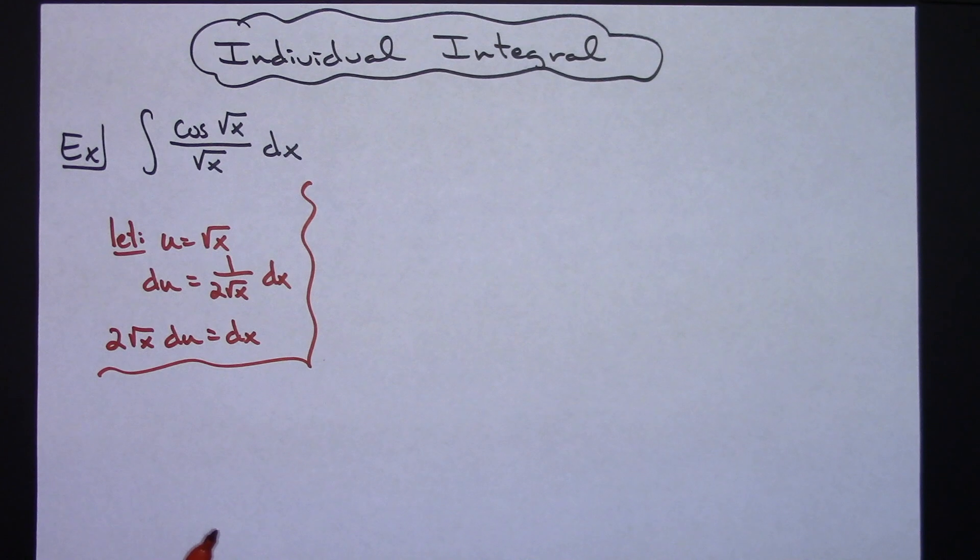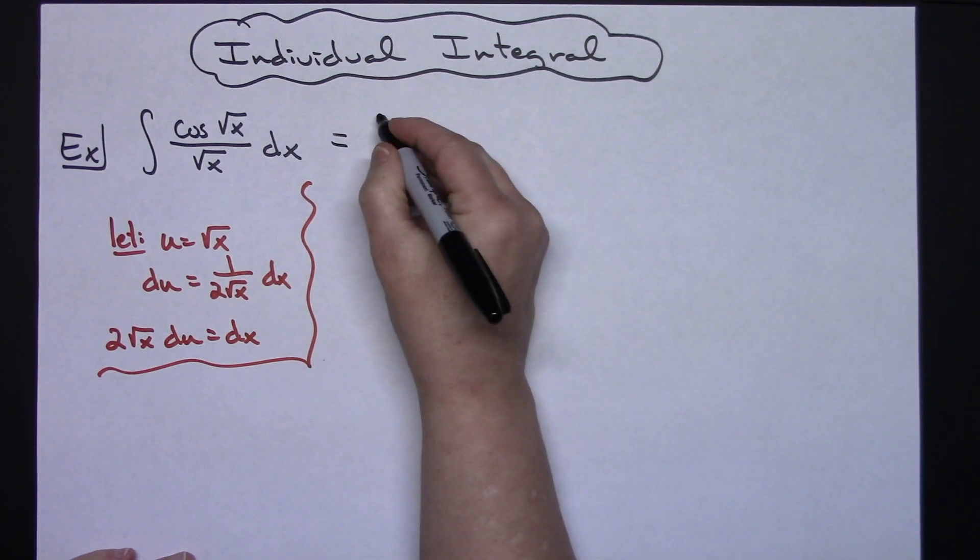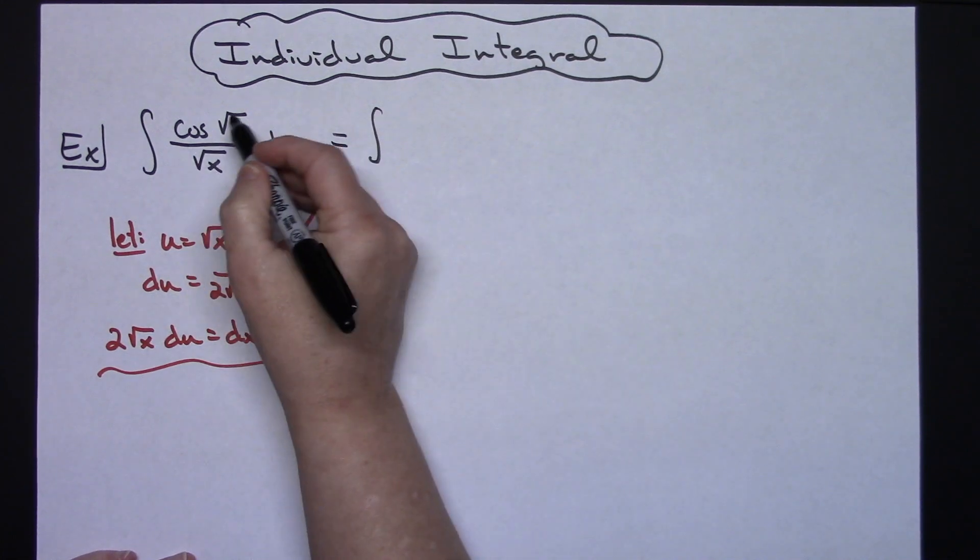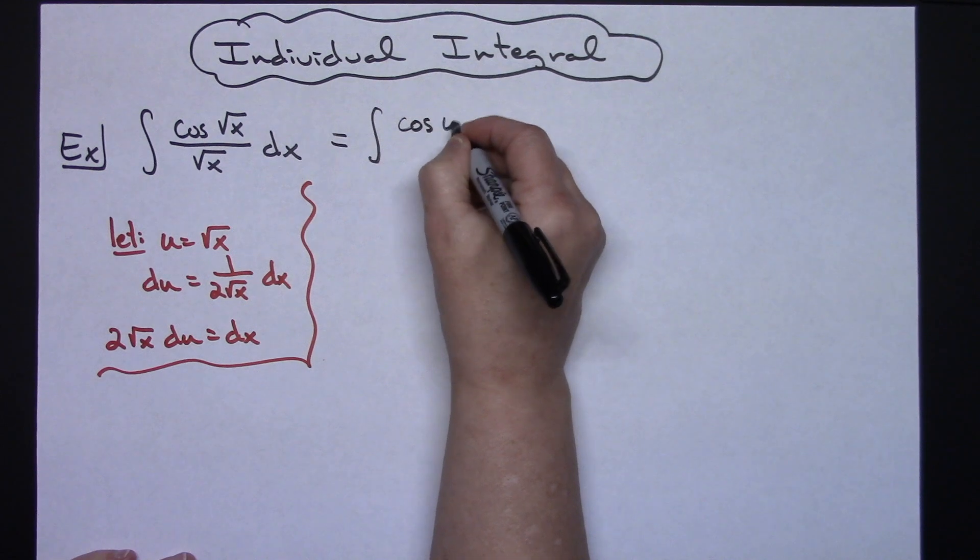Now we're going to come up here to our original problem and we're going to start making some substitutions. We'll have the cosine square root of x so we'll replace the x with u. Cosine u.